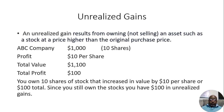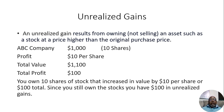The next one is what's called an unrealized gain. An unrealized gain results from owning but not selling an asset such as a stock at a price higher than the original purchase price. So you bought 10 shares of ABC Company for $100 each — that was $1,000 — and the stock went up $10 per share, so the stocks you own for $1,000 are now worth $1,100. That's a total profit of $100. You own the 10 shares of stock that increased in value by $10 per share or $100 total.